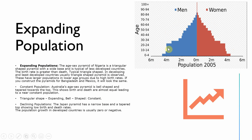To summarize: a triangular shape means an expanding population with high birth rates; a bell shape means a constant population where birth and death rates are roughly equal; and a declining population like Japan's has a narrow base tapering at the top, showing low birth and death rates. The population growth in developed countries is usually zero or negative.